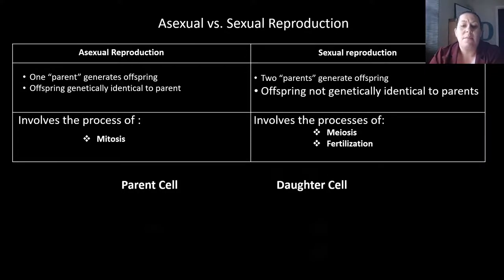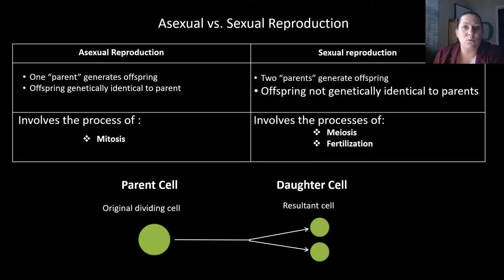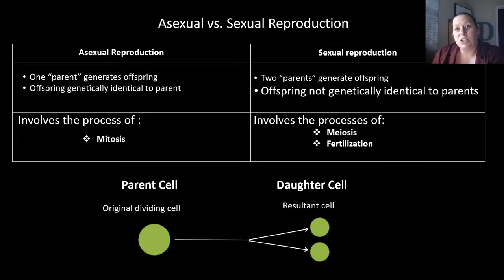We have the parent cell, and the parent cell is going to divide into two daughter cells. This is the example we would see for asexual reproduction, because we have one parent dividing into two. Those cells are genetically identical to each other and to the parent.